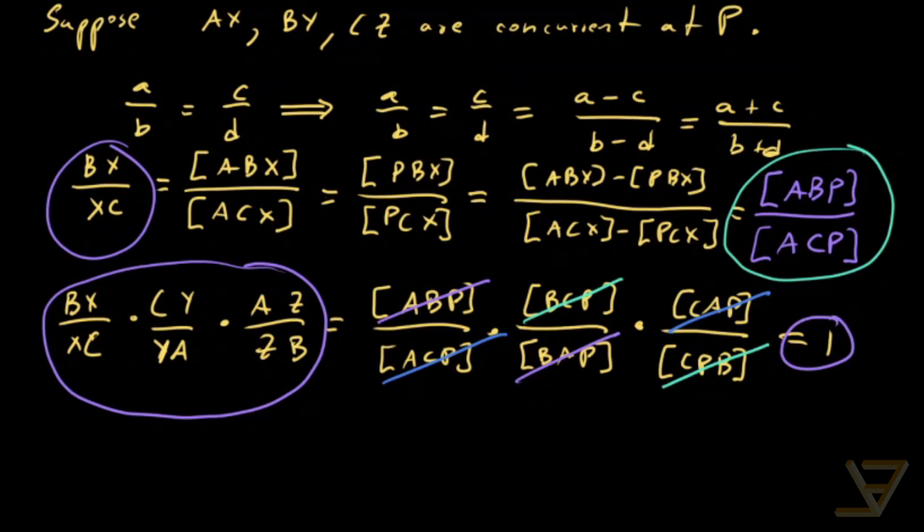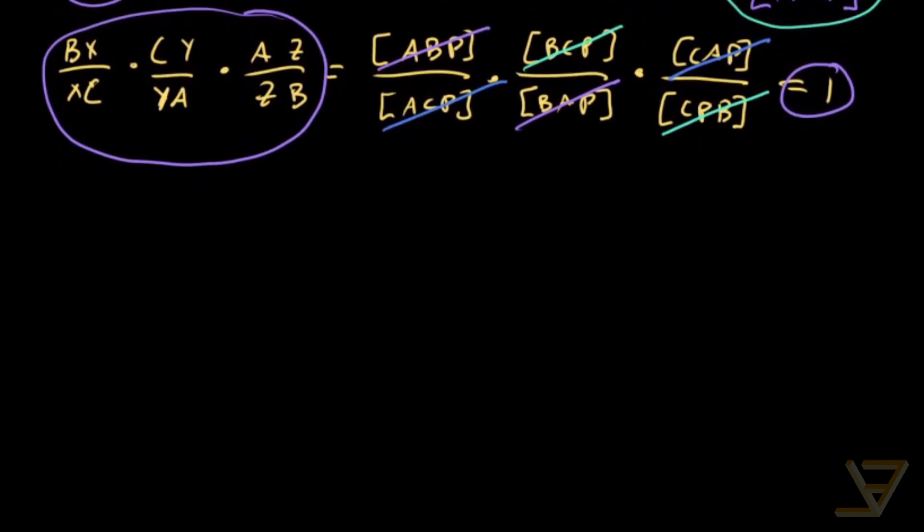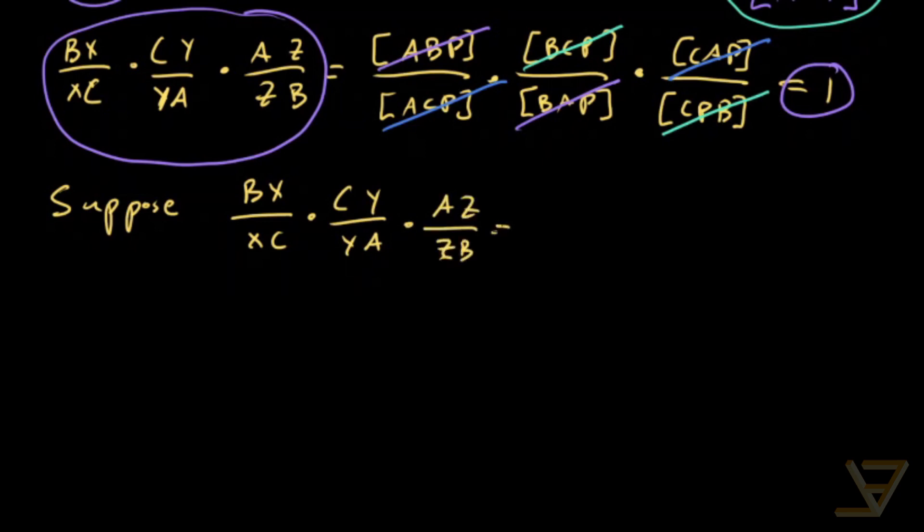Now let's go in the other direction. Because this is Ceva's theorem that we just proved. But the converse of Ceva's theorem also works as well. So suppose BX over XC times CY over YA times AZ over ZB is equal to 1.